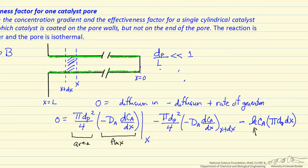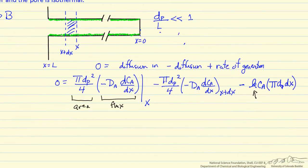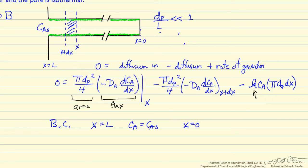These are all the terms in the mass balance. We need consistent units for k since we're talking about the surface available for reaction. Then we need boundary conditions. The first boundary condition is that at x equals L, the concentration is CAs. At x equals 0, there's no flux through the wall — it's a solid wall, so A does not diffuse through it, which means the concentration gradient at that point must be zero.